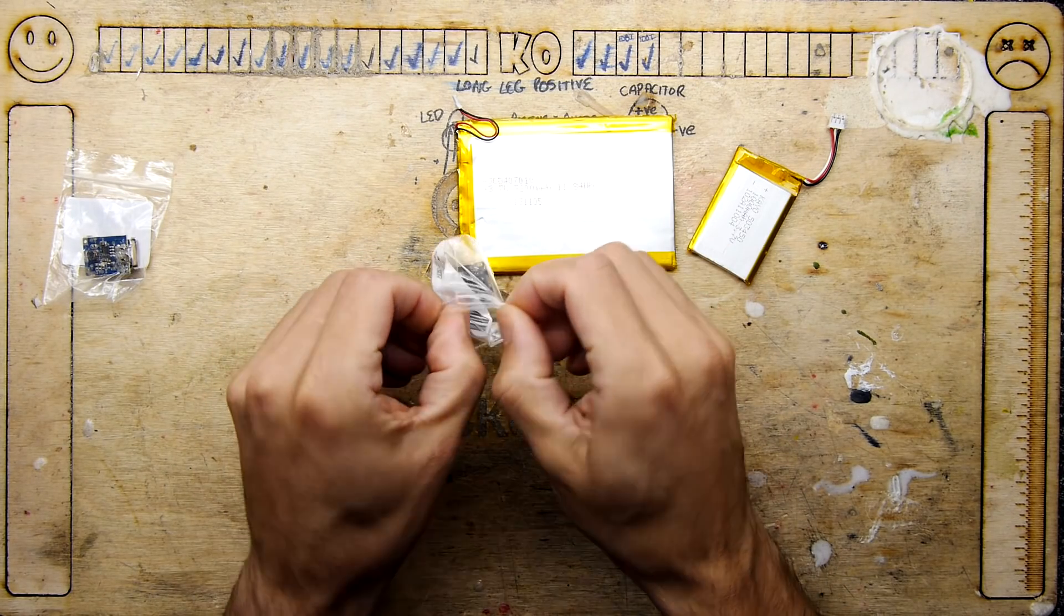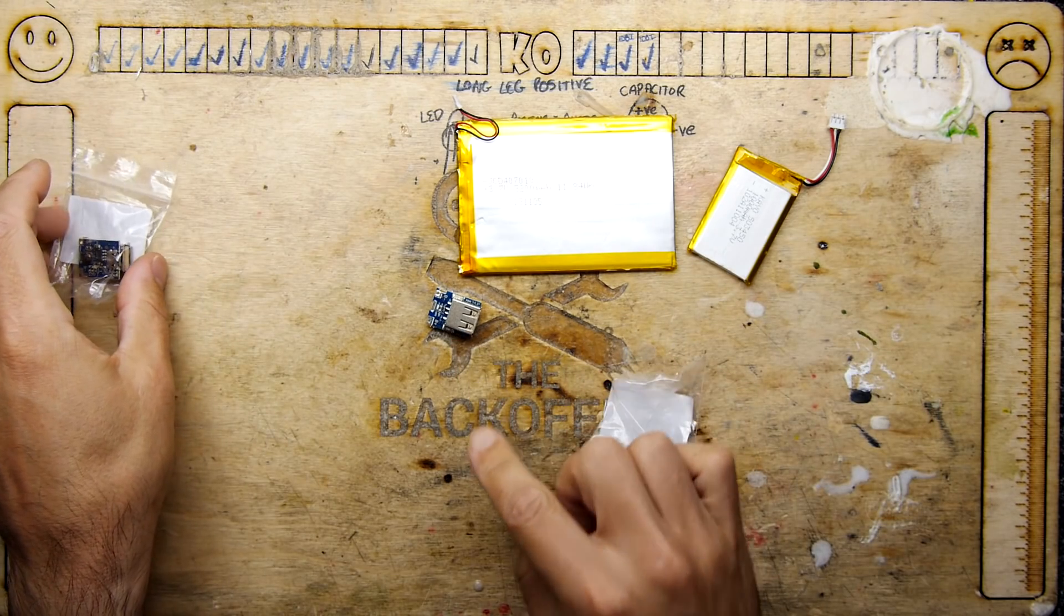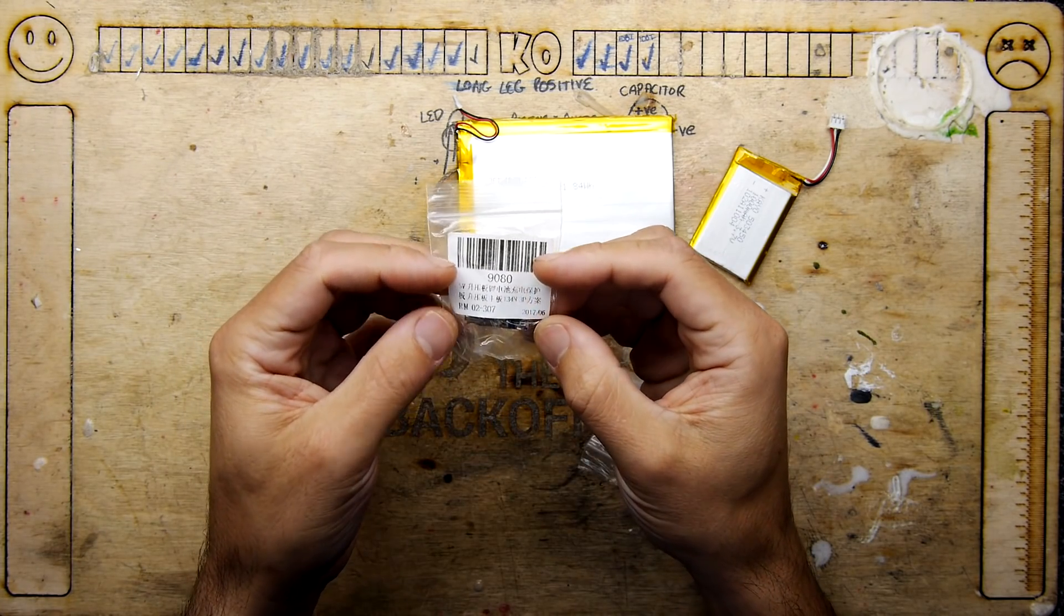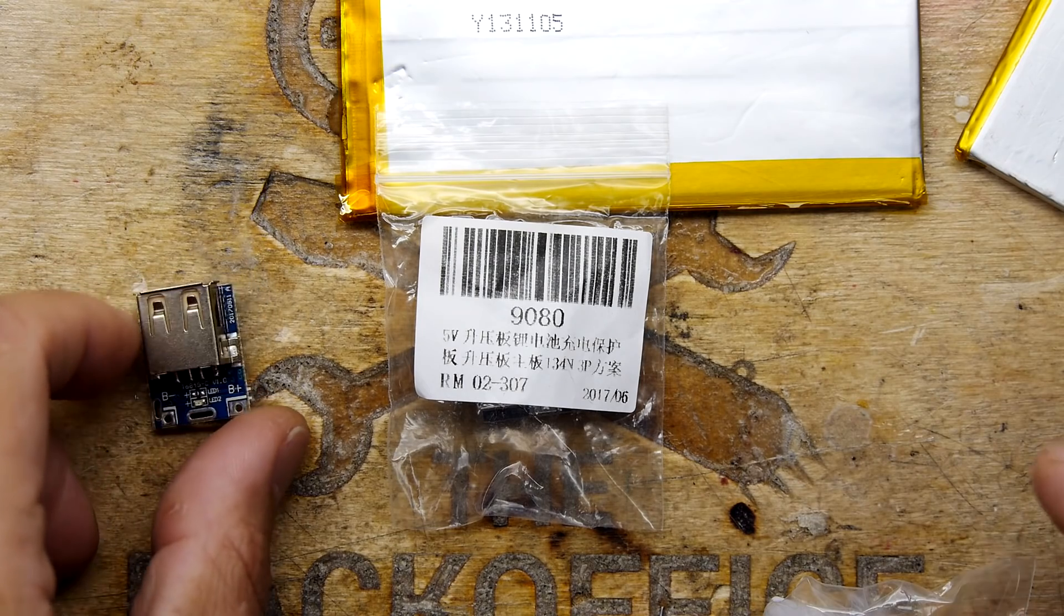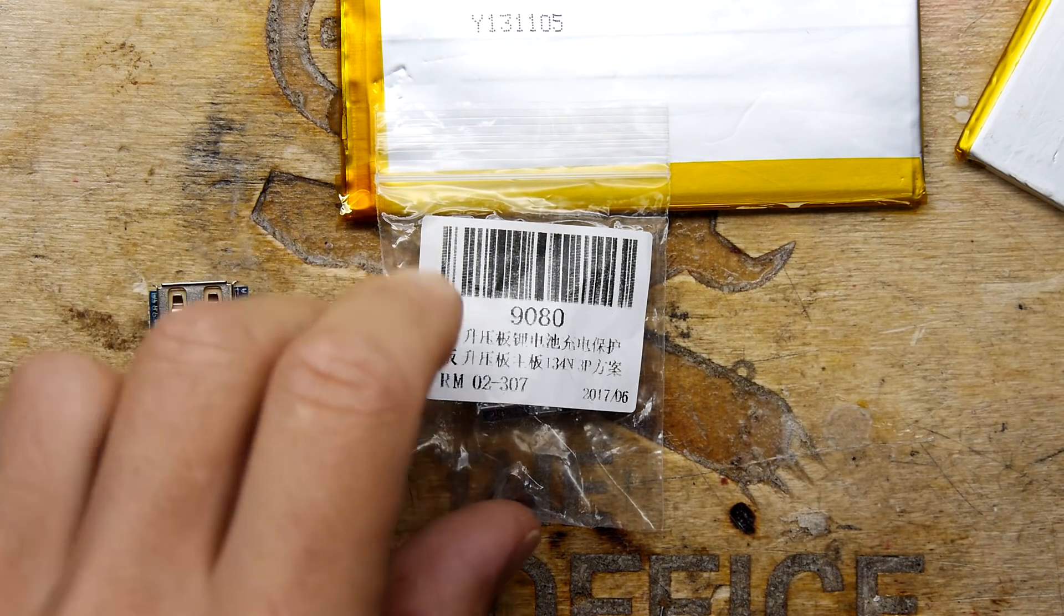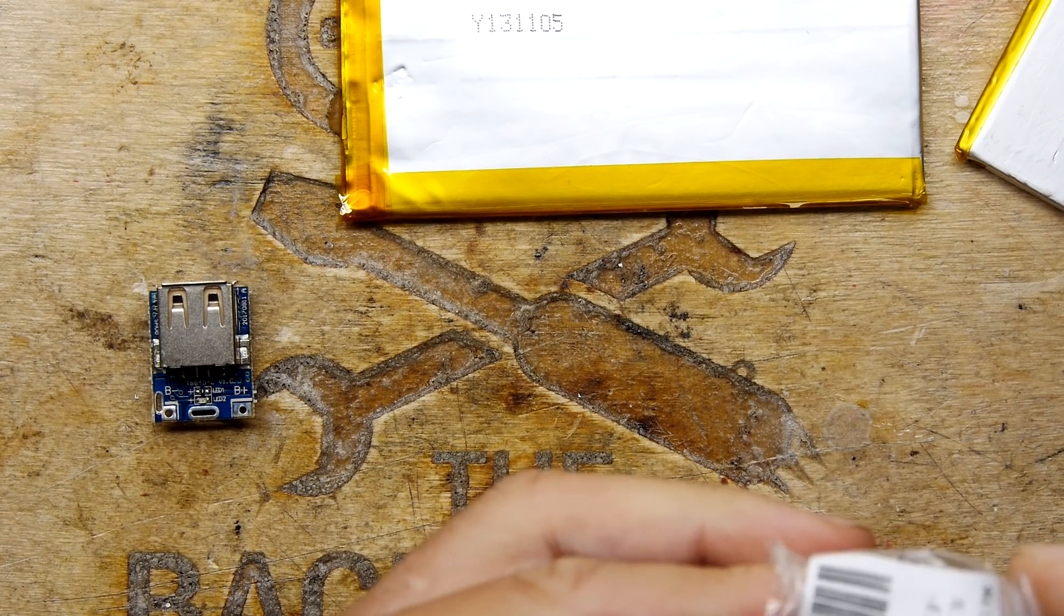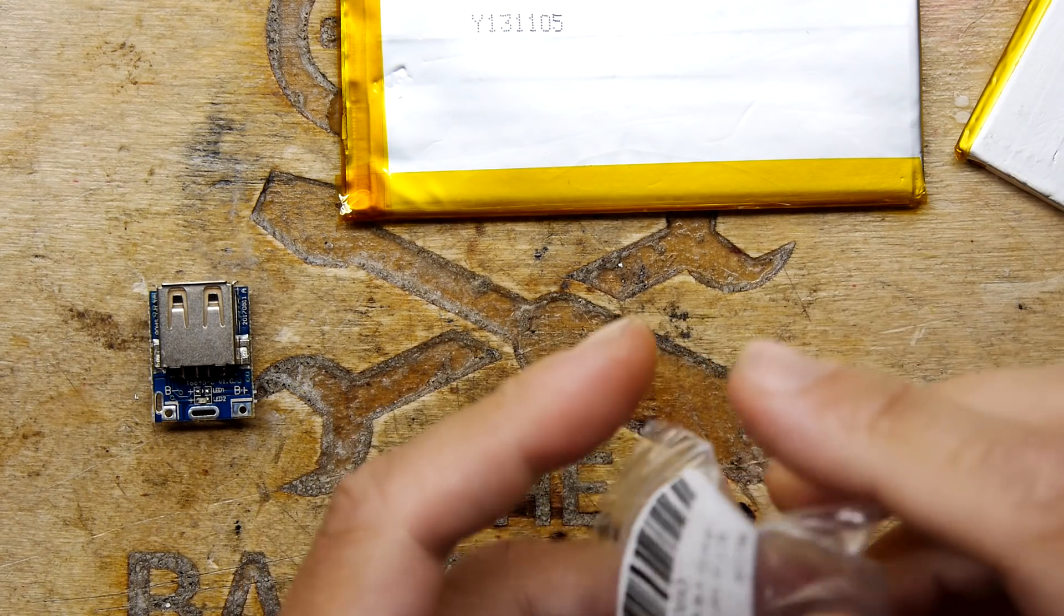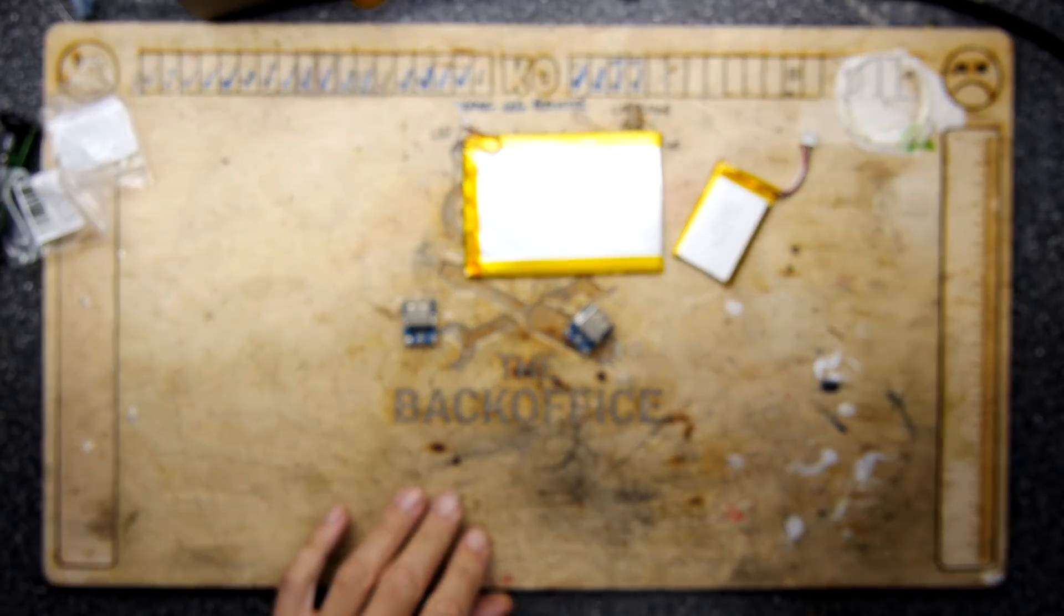If you recall from earlier videos, I actually got a bunch of these little modules. They just say 9080, there's not really much description here. They were just from a random selection of Alibaba style modules that I bought on the internet, and these apparently are power bank modules.